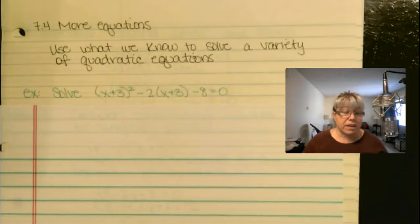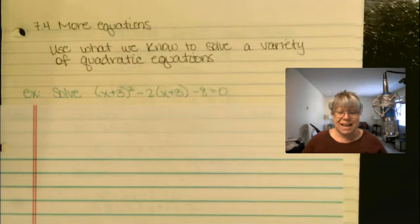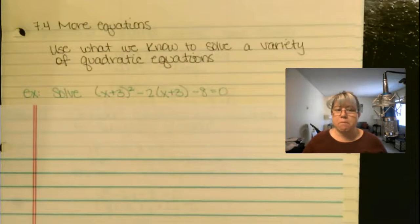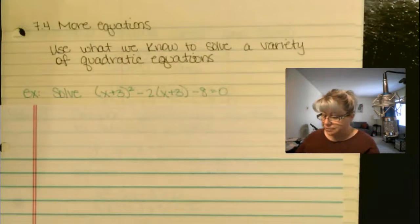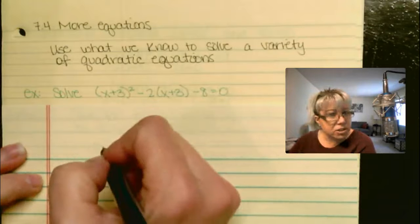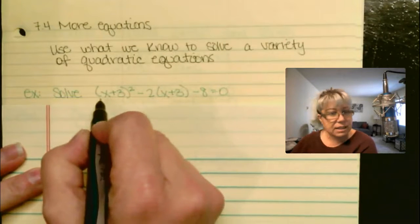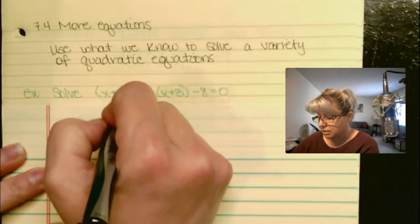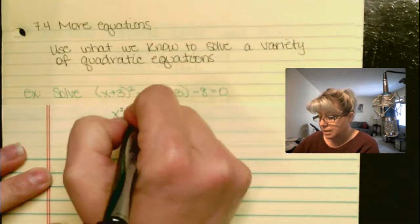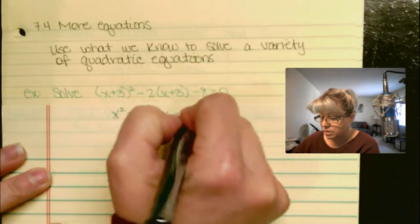Let's solve x plus 3 squared minus 2 times x plus 3 minus 8 equals 0. Your first thought might be to expand, combine like terms, and simplify the left-hand side as best as you can. But let's not do that. Instead, let's consider substituting, since what I'm used to is something that looks like x squared plus bx plus c equals 0.